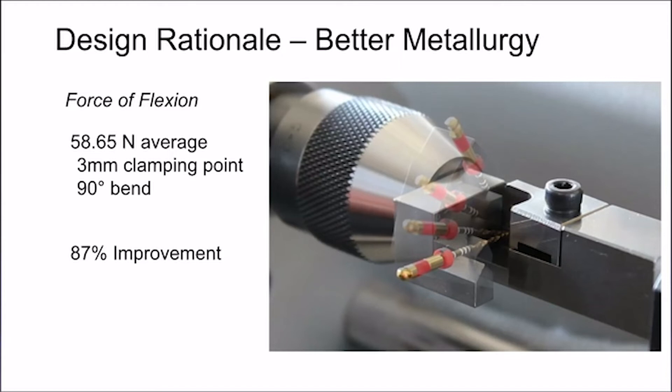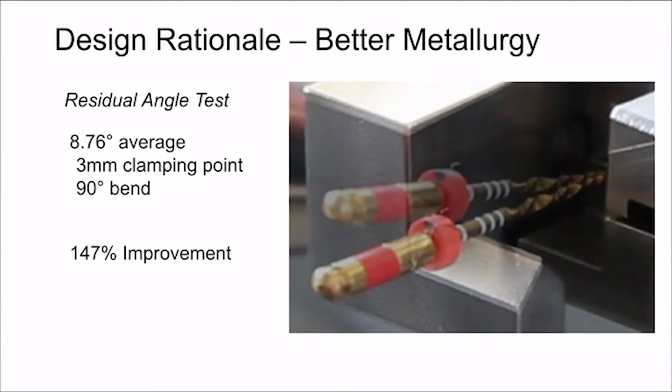Force of flexion takes 58.65 newtons on average to bend it 90 degrees — an 87% improvement. But my favorite aspect of this new technology is its ability to retain shape. One of the most important aspects of a titanium file is flexibility, but it is also one of the least desirable characteristics — a file that easily flexes down any canal also wants to constantly straighten itself. If the file can retain its shape, it is more likely to instrument the canal evenly rather than biasing one aspect over the other.